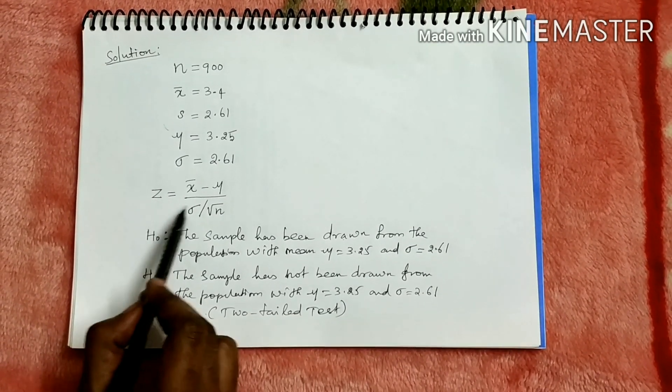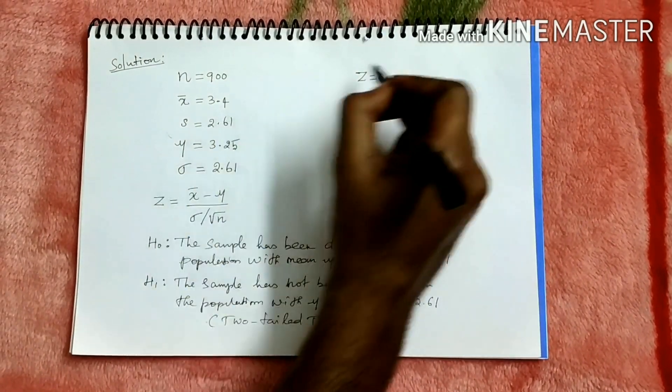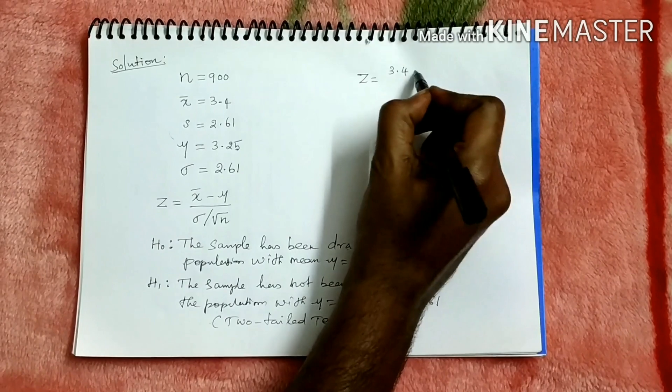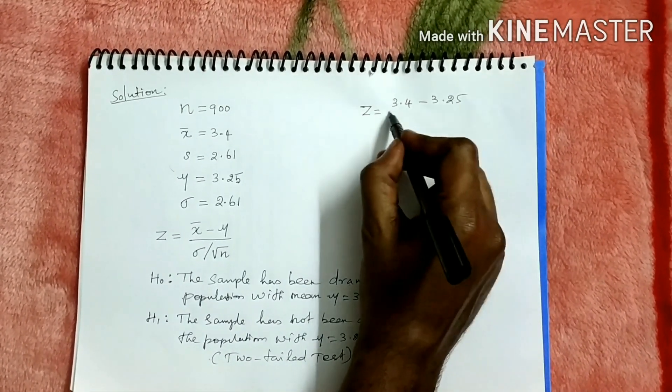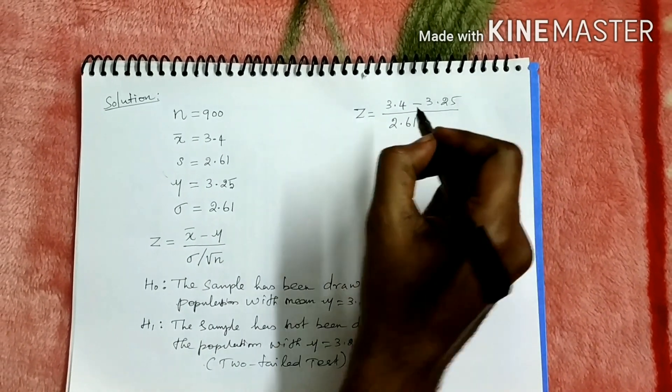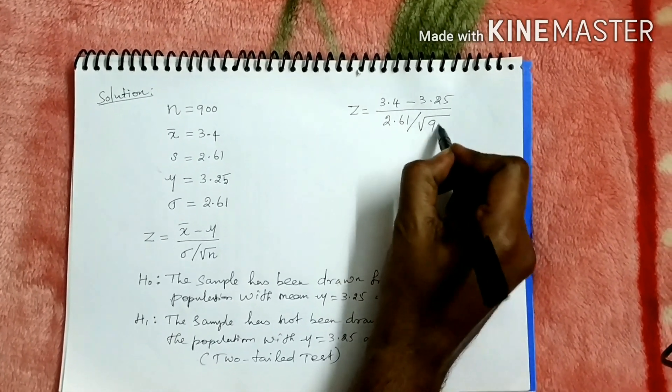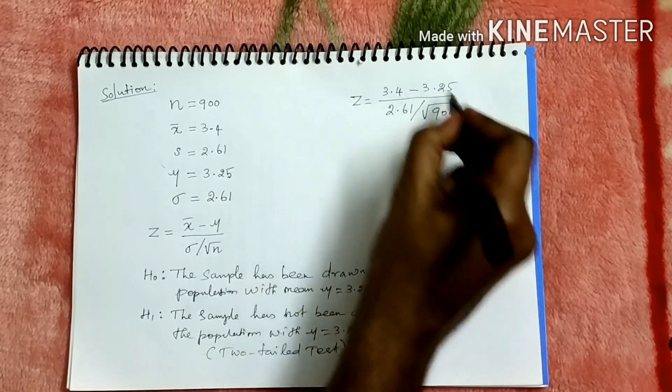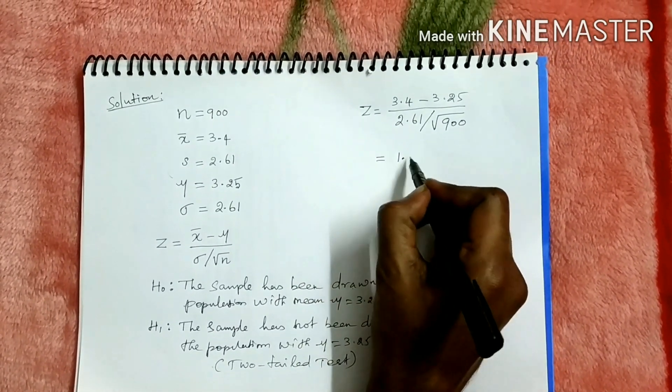Now substitute the given values in the formula. Z is equal to x bar 3.4 minus mu 3.25 by sigma 2.61 by root n 900. So calculate this in the calculator, you will get 1.73.